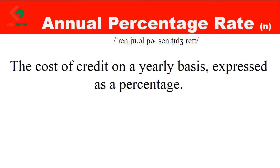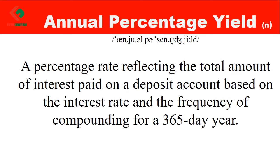Annual percentage rate: The cost of credit on a yearly basis, expressed as a percentage. Annual percentage yield: A percentage rate reflecting the total amount of interest paid on a deposit account, based on the interest rate and the frequency of compounding for a 365-day year.